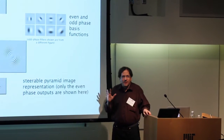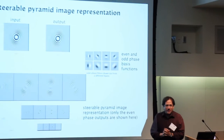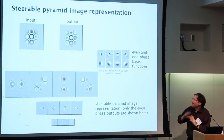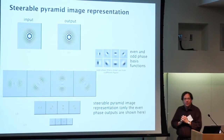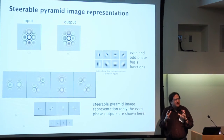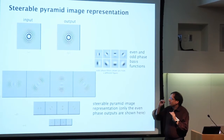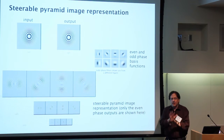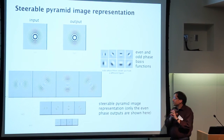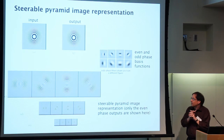Here's a representation — and like Pietro, I'm following on by showing slides from my thesis. This is a steerable pyramid representation. The steerability is not a critical aspect here. What's important is it has non-alias subbands, and it has quadrature pair filters at each position, orientation, and scale.